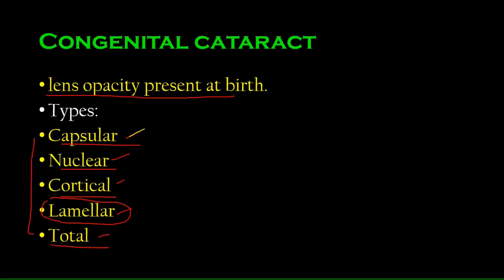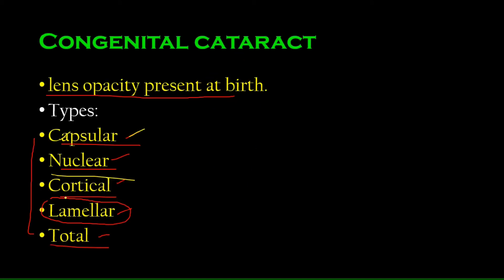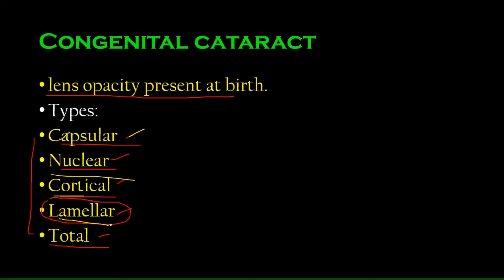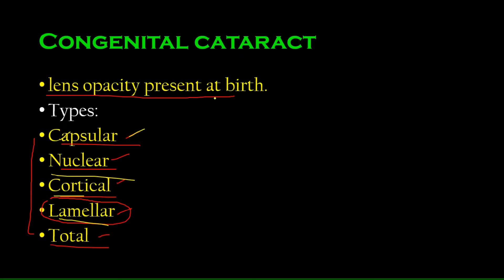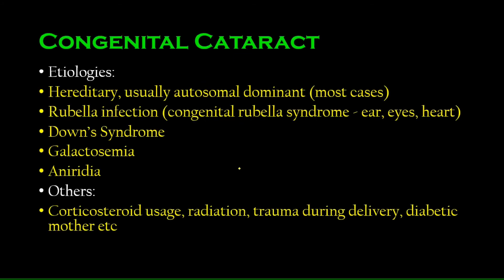Quick recap: capsular is near the capsule; nuclear is in the nucleus; cortical can be all over but not in defined layers; lamellar is similar to cortical but confined to a definite layer; and total means the entire lens is opaque.